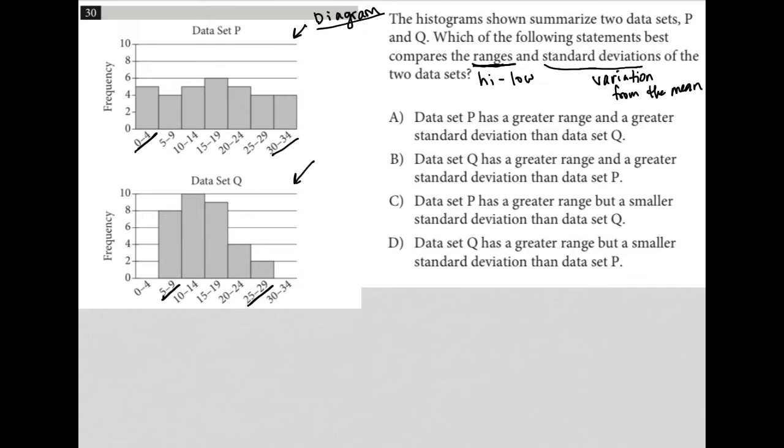I can visually see that the range for data set P - in terms of range, data set P's range is greater than Q. Just because I have values at these lower ends that I don't even have values at for data set Q. Data set P has a higher high than data set Q and has a lower low than data set Q. Therefore, the high value minus the low value must be greater for data set P.